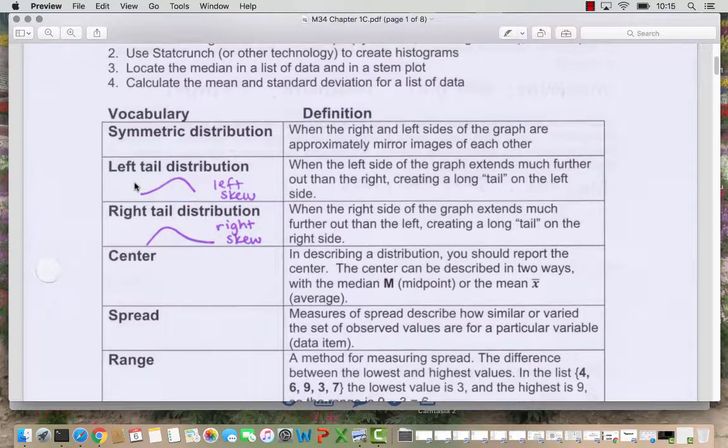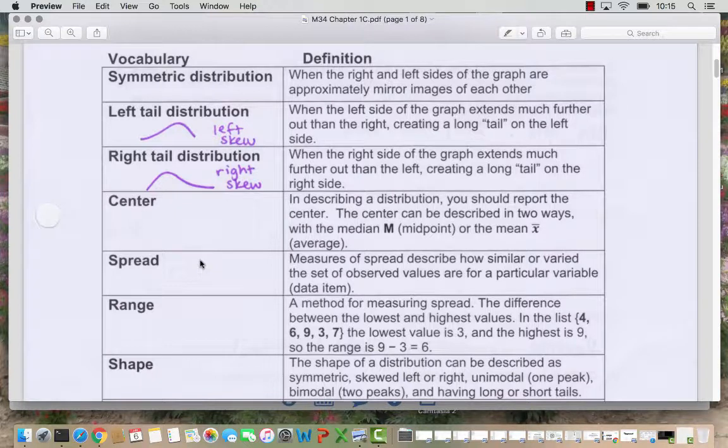Similarly, the right-tail distribution or right-skew distribution has a tail out on the right side. We're going to be looking at two ways to describe the center of a distribution. The median is known as the midpoint and we'll use a capital M to denote the median. The mean is the average and we'll use x with a bar on top to denote the mean.